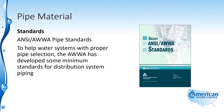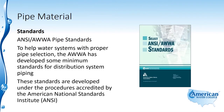To help water systems with proper pipe selection, the American Water Works Association has developed some minimum standards for distribution system piping. These standards are developed under the procedures accredited by the American National Standards Institute, or ANSI, so they are called the ANSI AWWA standards.